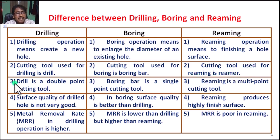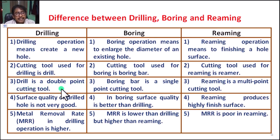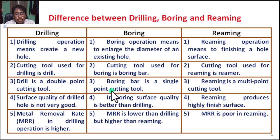Number three, for drilling: drilling is a double-point cutting tool, with very high tool rotation speed. Number three, for boring: the boring bar — that means the boring tool — is a single-point cutting tool, with low tool rotating speed.